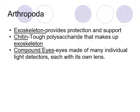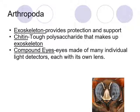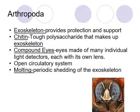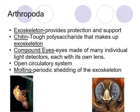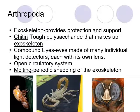These jointed appendages may become adapted for particular functions — reproduction, locomotion, feeding, and protection. Other characteristics of arthropods include an exoskeleton on the outside that provides protection and support, usually made of chitin, a tough polysaccharide. Arthropods also have compound eyes made of many individual light detectors, each with its own lens — very different from our single-lens eyes. They have an open circulatory system and many go through molting, shedding their exoskeleton when they become too large, as we see with cicadas that molt after hatching from the ground.